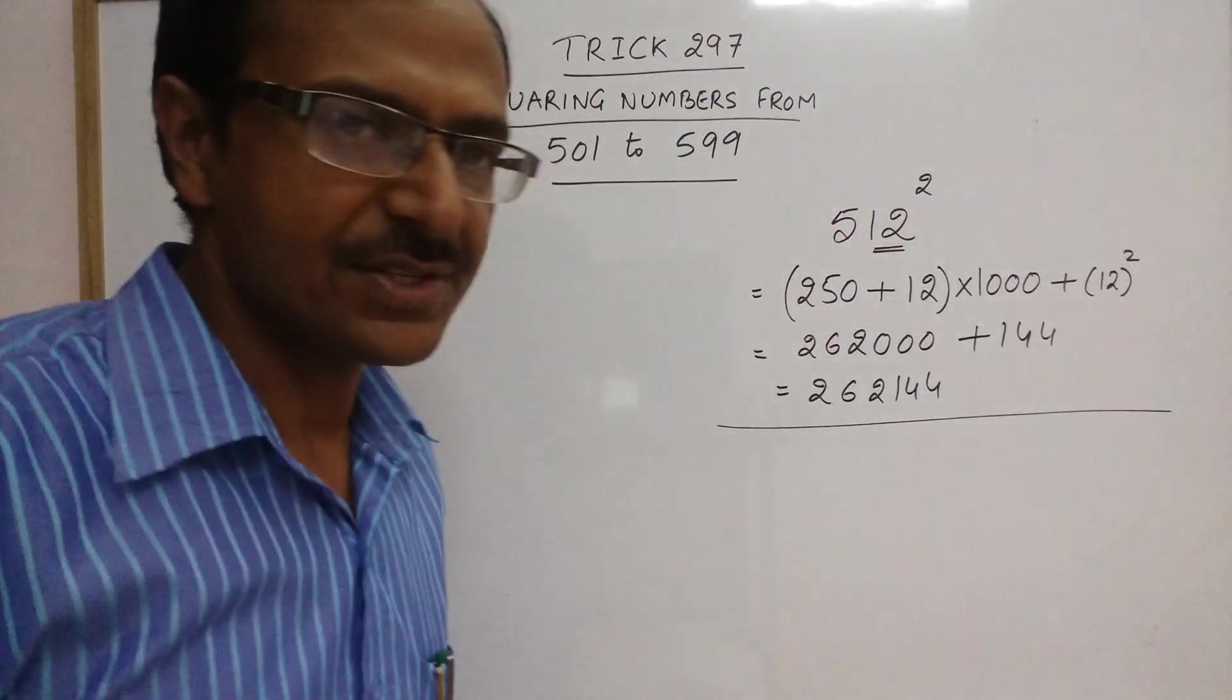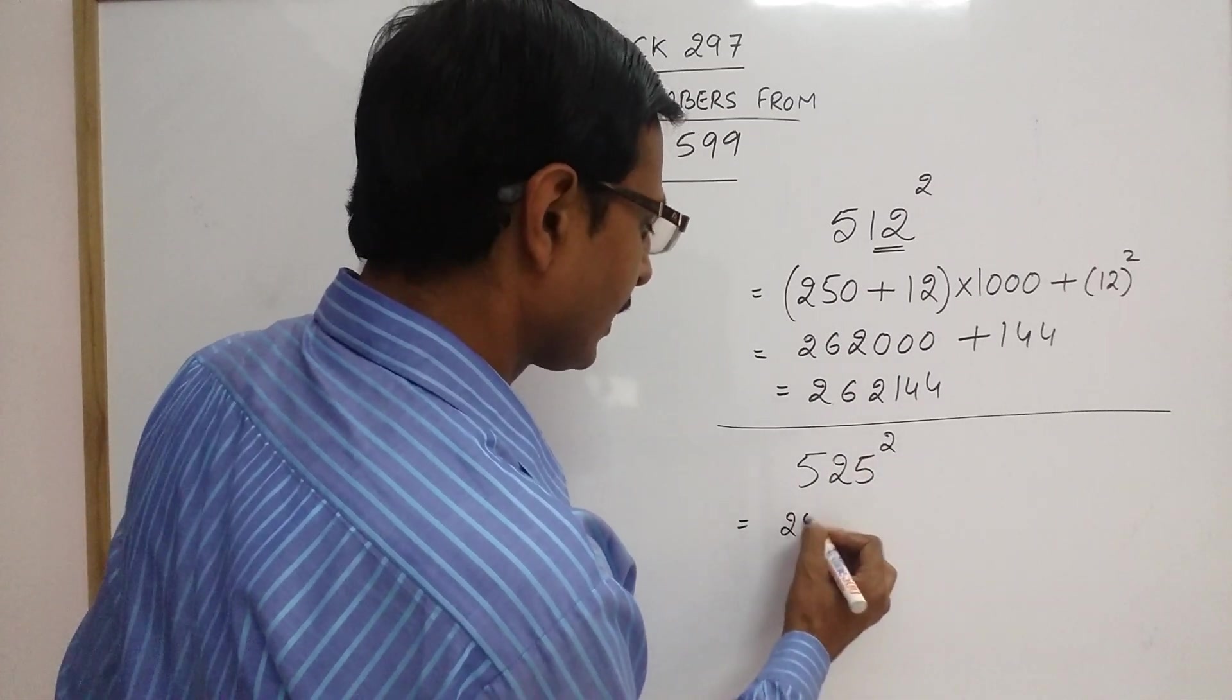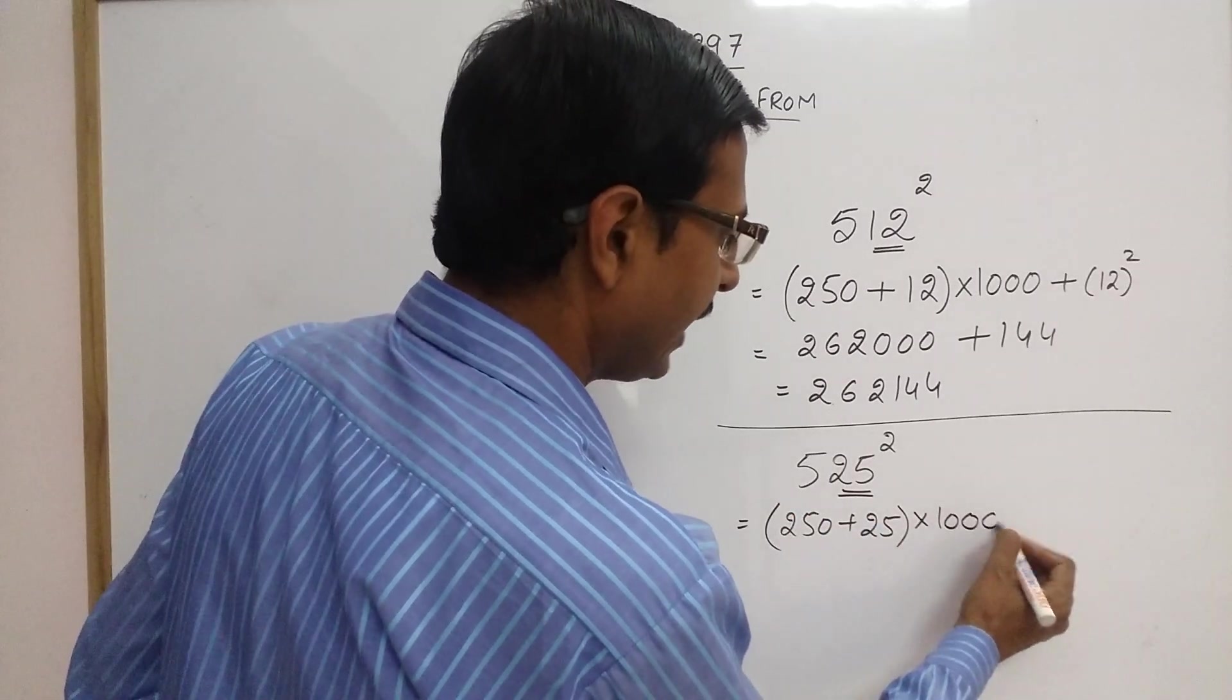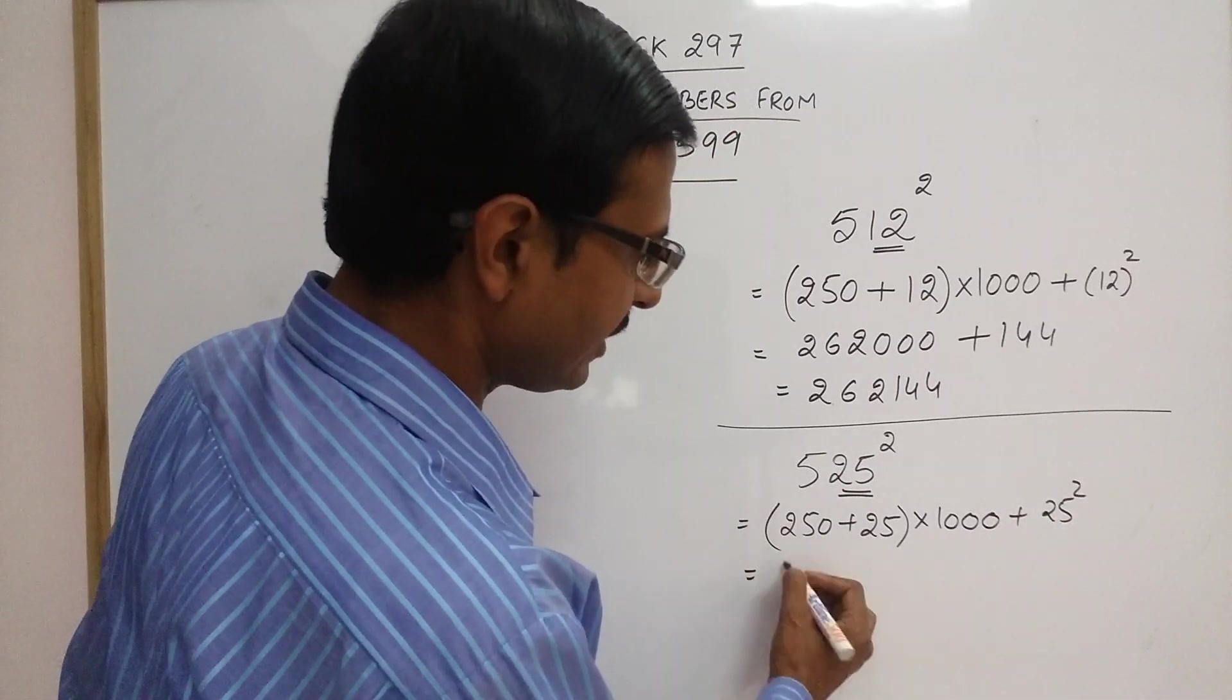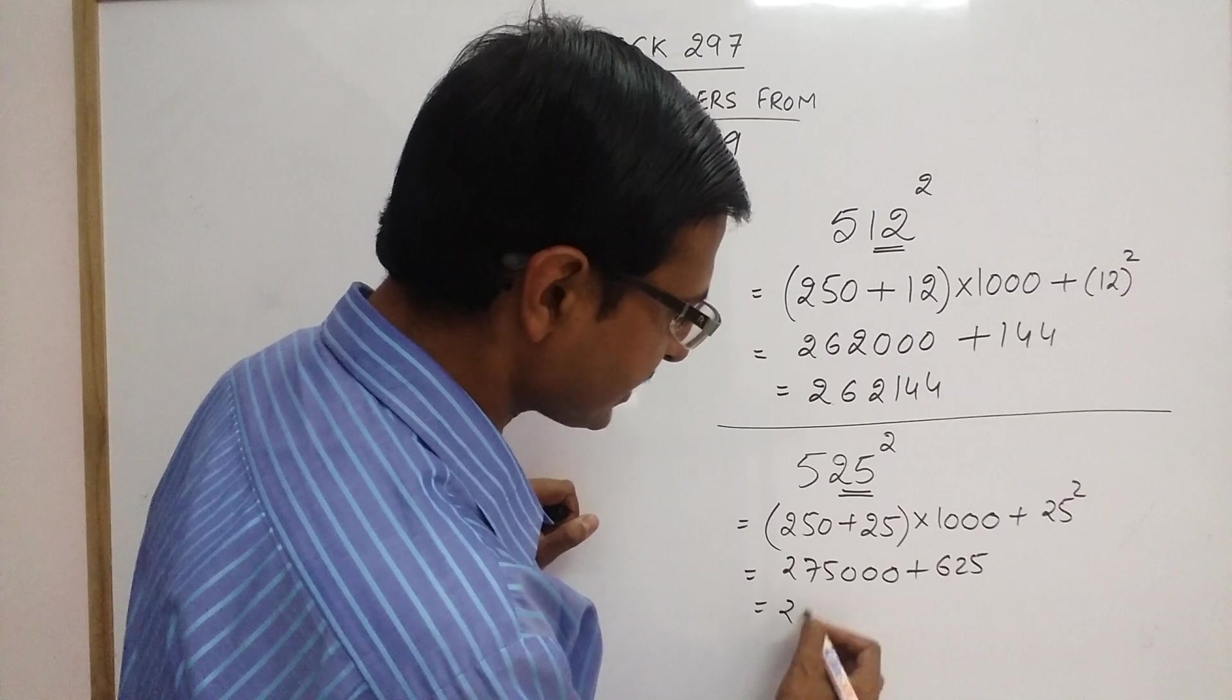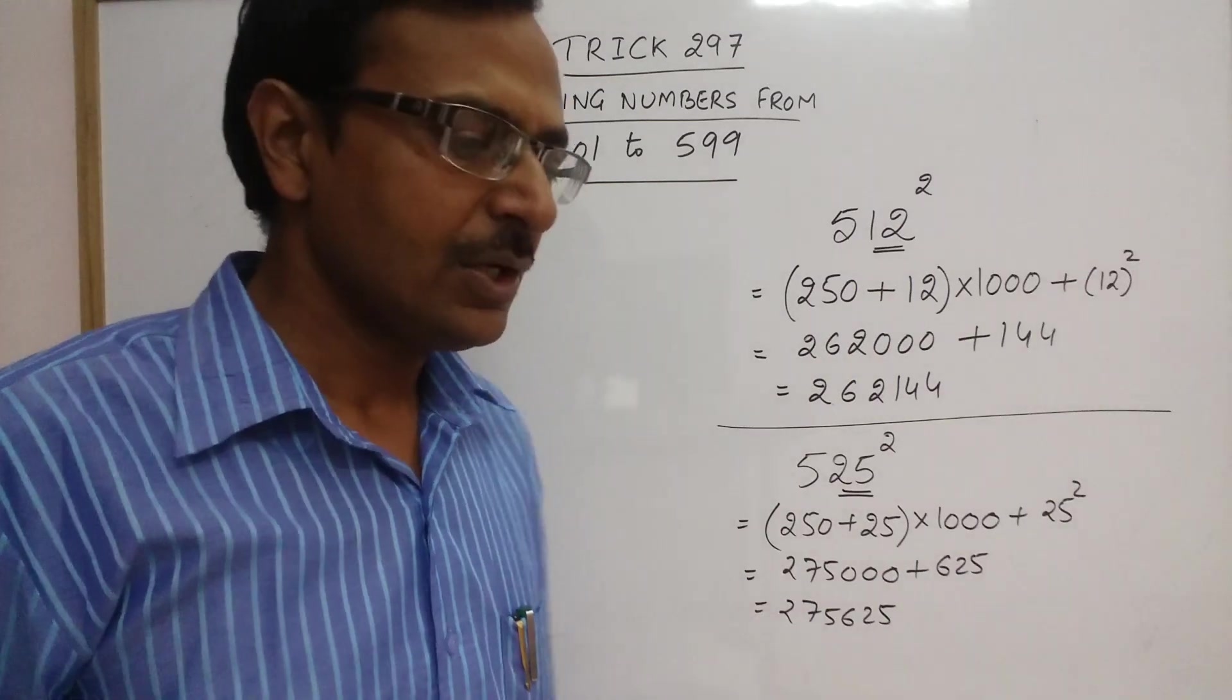Let us take one more example of such kind. Say we have 525 square. 250 plus the number 25 apart from the first 5, multiplied by 1000, and add 25 square to the result. So you get 275 followed by 3 zeros and 625 to add to it. The answer is 275,625, which is the square of 525.